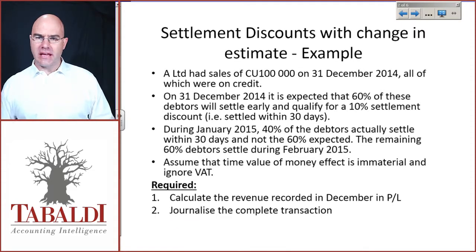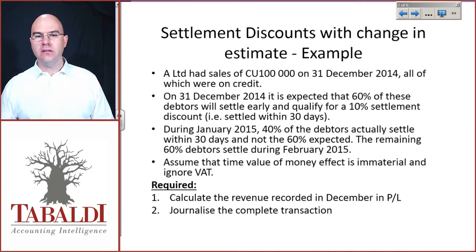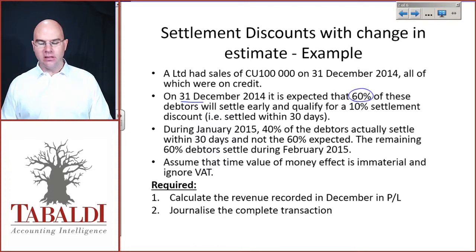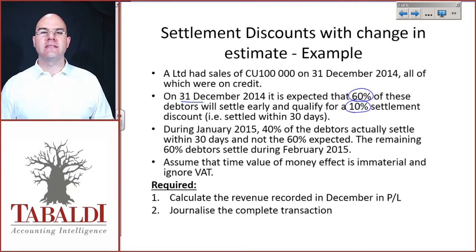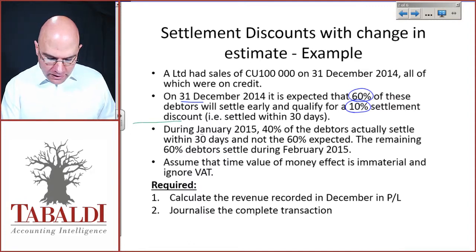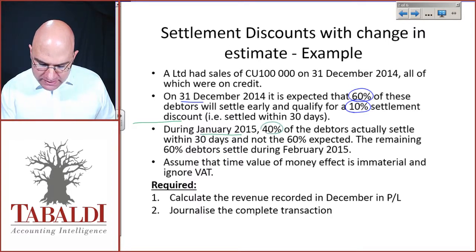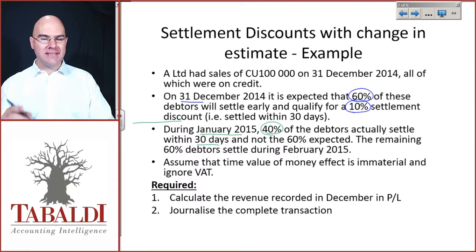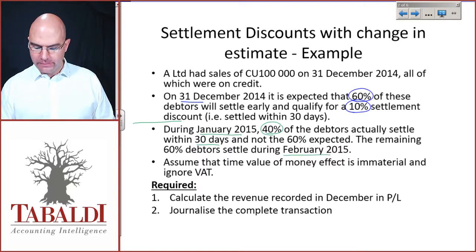A very similar example to the previous one: sales of 100,000 on 31st December 2014, all on credit. On 31st December 2014 we still expect that 60% of these debtors will settle early, i.e. within 30 days, and qualify for a 10% settlement discount. But then in January 2015, only 40% of the debtors actually settle within 30 days — not the 60% we expected.